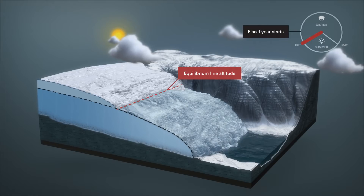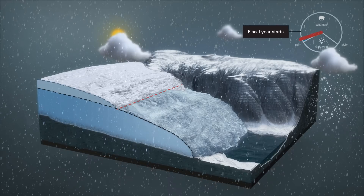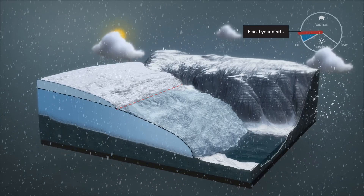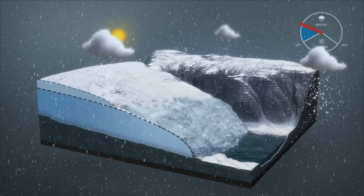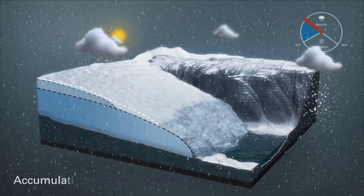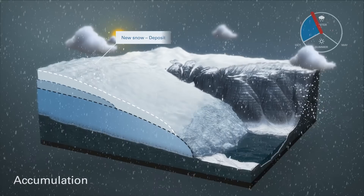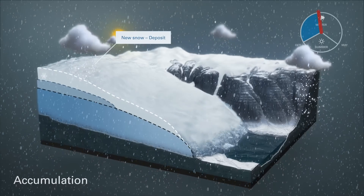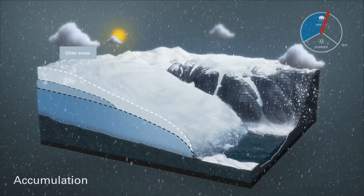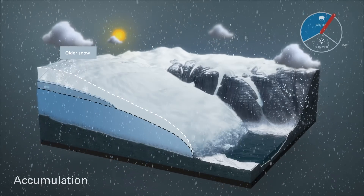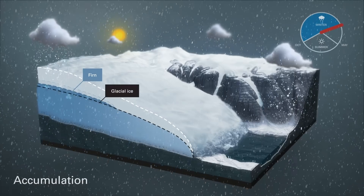The fiscal year or annual savings period for a glacier starts with the first autumn snow. The new snow cover can be thought of as a deposit — a new mass that accumulates on the whole glacier until the following spring. Underneath the thick layer of new snow, older snow becomes compact and turns first into firn and at deeper levels into glacial ice.